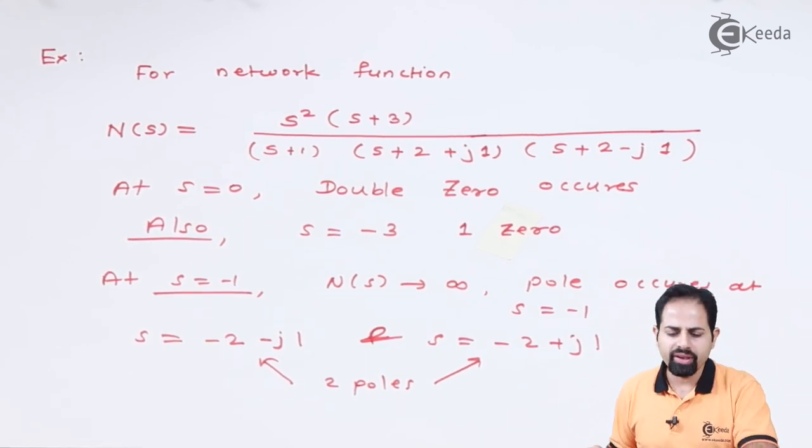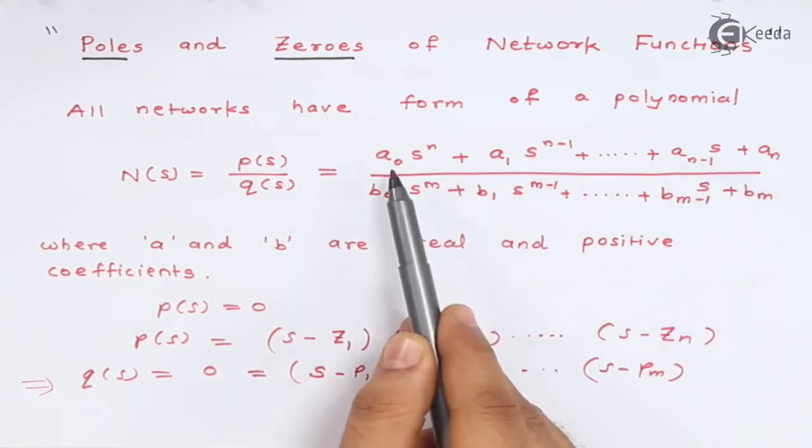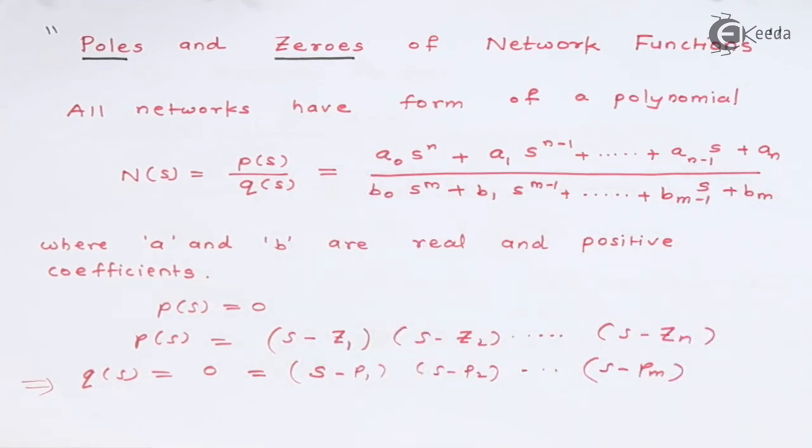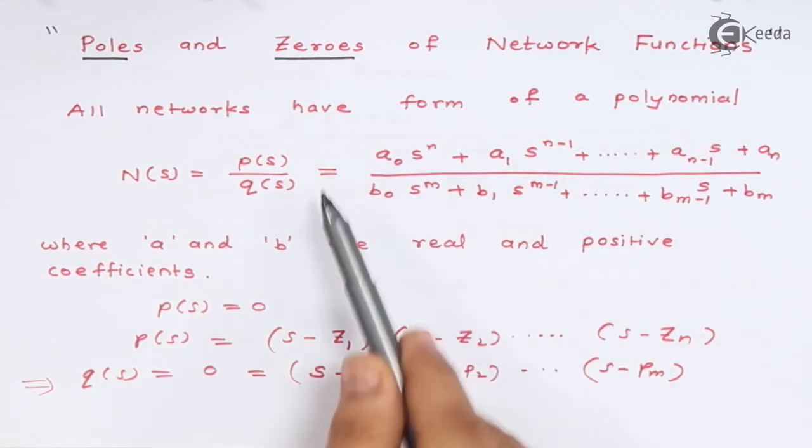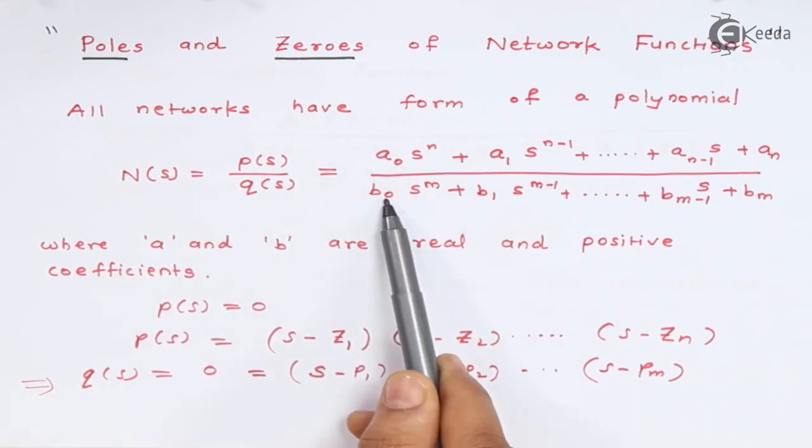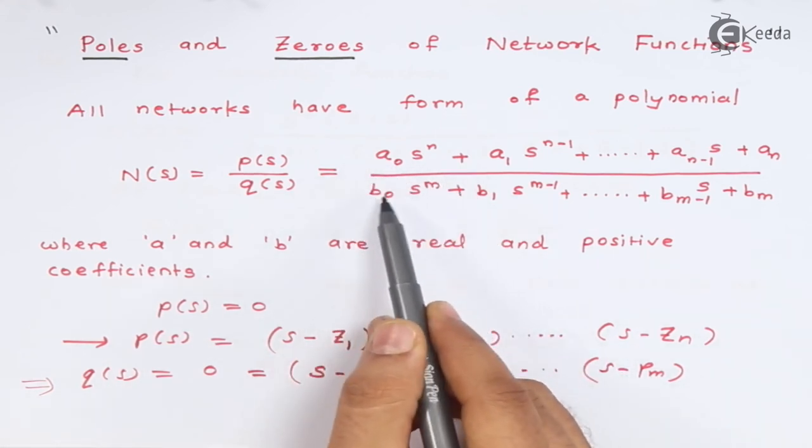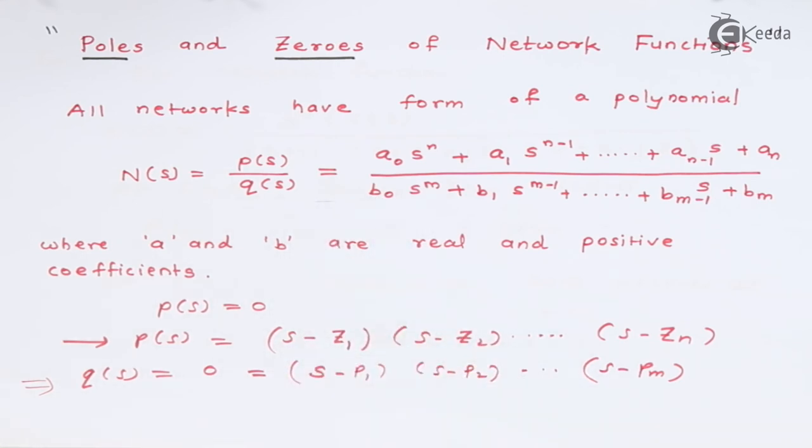Now one thing is remaining. Whenever we say that this P(s) is 0, we need to take this a₀ outside, then only we can factorize it. That means if you take this step and if you solve it further, what I will do, I will take this a₀ common, I will also take this b₀ common, and remaining term which I can factorize as this P(s), which I can factorize as (s - z₁)(s - z₂), only if I can take a₀ and here b₀ outside.